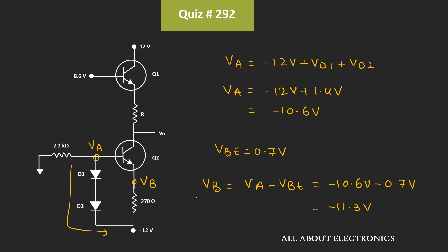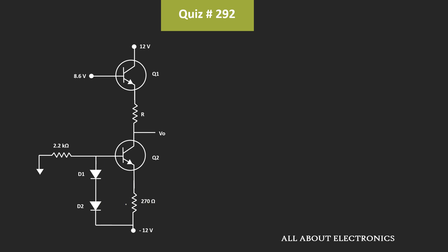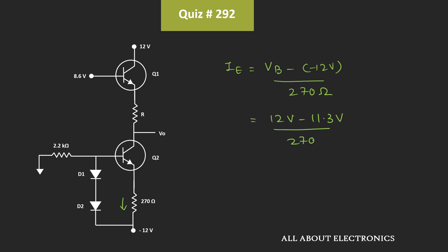Now, once we know the voltage at this node, we can easily find the emitter current. The emitter current IE is equal to voltage Vb minus (minus 12V) divided by 270 Ohm. That is equal to 12V minus 11.3V divided by 270 Ohm, which is equal to 2.59mA. That means emitter current IE is equal to 2.59mA.